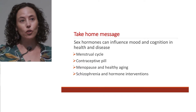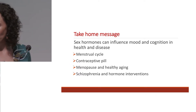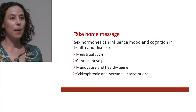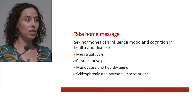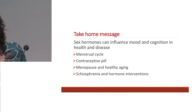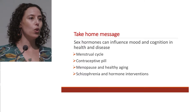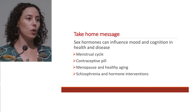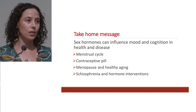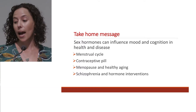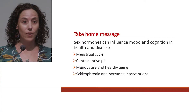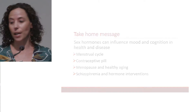The contraceptive pill and what we can learn from that, what happens during menopause and healthy ageing processes, and then I'm going to switch to talk about a disease model — schizophrenia — and the role of hormones in schizophrenia and the potential for hormones as interventions for some of the symptoms of schizophrenia.